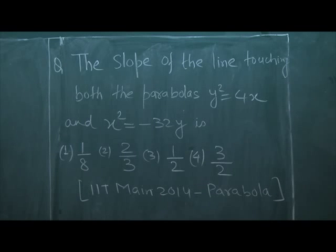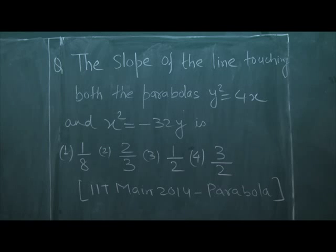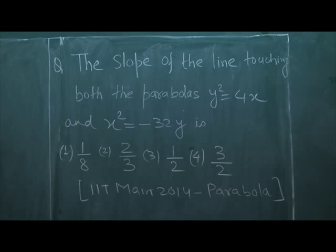The slope of the line touching both the parabolas y² = 4x and x² = -32y. The options are: 1st option 1/8, 2nd option 2/3, 3rd option 1/2, and 4th option 3/2.